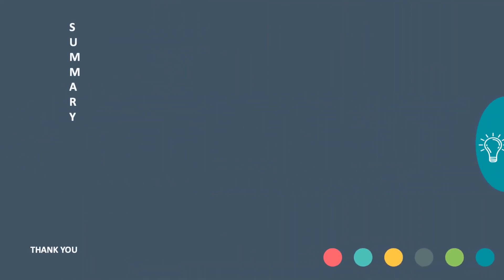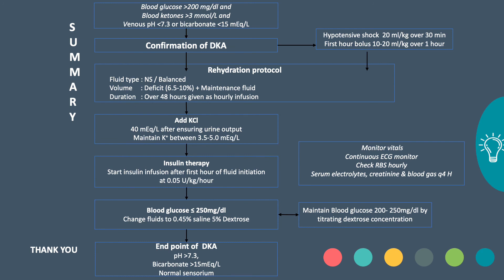To summarize: a child presenting with hyperglycemia, ketosis, and acidosis — once DKA is confirmed — is initiated on fluids. The fluid of choice is saline; estimate a deficit of 6.5 to 10% and add it to maintenance fluid, giving it over 48 hours. Potassium is added at 40 mmol per liter after ensuring adequate urine output, targeting potassium between 3.5 to 5 mEq per liter. Start insulin at 0.05 to 0.1 units per kg per hour; once blood glucose drops below 250 mg/dL, change fluid to dextrose-containing fluids, targeting glucose 200 to 250 by titrating dextrose concentration. Once DKA endpoints are achieved and the child tolerates feeds, switch to subcutaneous insulin and initiate a diabetic plan.